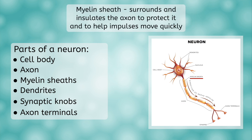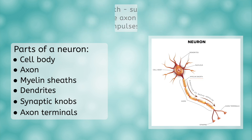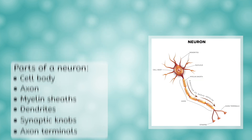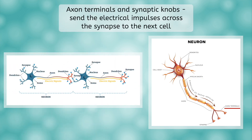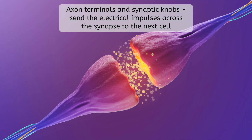Myelin sheaths are an insulator made of fat that wrap around the axon to protect it. They act similar to the rubber coating on an electrical wire, and this insulation helps impulses travel faster. At the end of the axon are the axon terminals and synaptic knobs, which send the electrical message on to the next cell across the synapse — the small space between nerve cells.